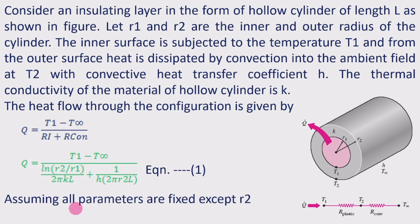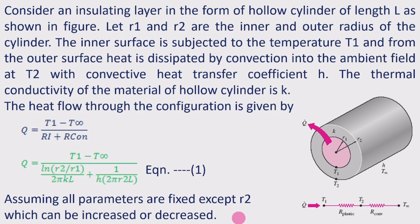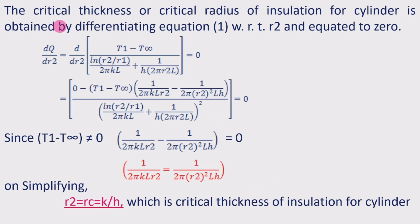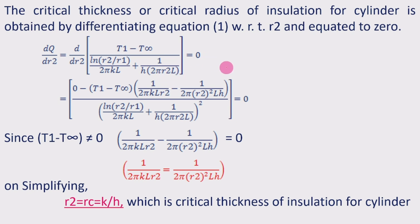In equation 1, assuming all parameters are fixed except r2 — that is, T1, T_infinity, r1, L, h, and k are all fixed — r2 is the only variable, which can be increased or decreased. The critical thickness or critical radius of insulation for the cylinder is obtained by differentiating equation 1 with respect to r2 and equating to zero: dQ/dr2 = d/dr2 of [(T1 − T_infinity) / (ln(r2/r1)/(2πkL) + 1/(h·2πr2L))] = 0.